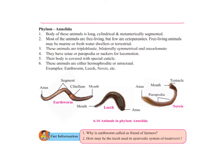Phylum Annelida — the body of this animal is long, cylindrical, and metamerically segmented, meaning they have segments on their body. Most of them are free living but some are ectoparasites. Ectoparasites are parasites that live outside the body. The free-living animals can be aquatic or terrestrial. They are triploblastic, bilaterally symmetrical, and coelomate. They have setae, parapodia, or suckers for locomotion.